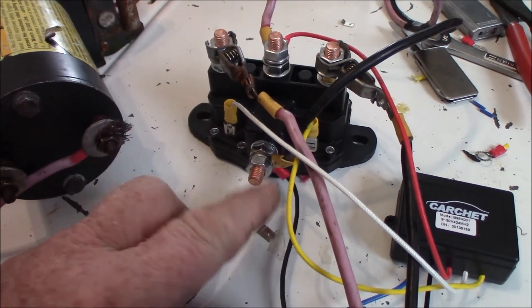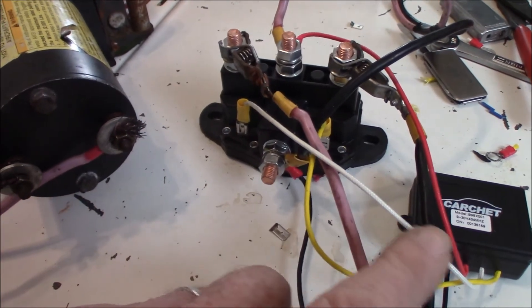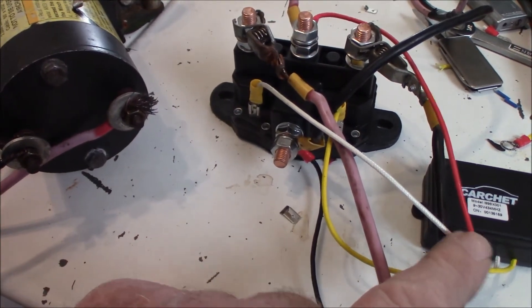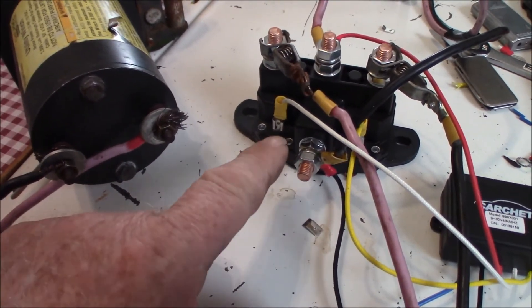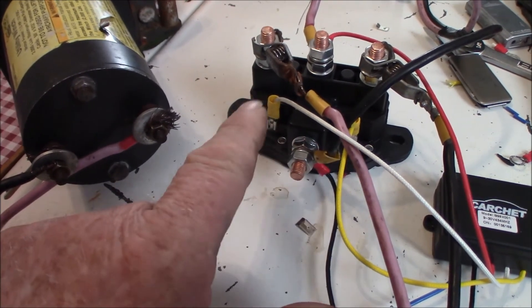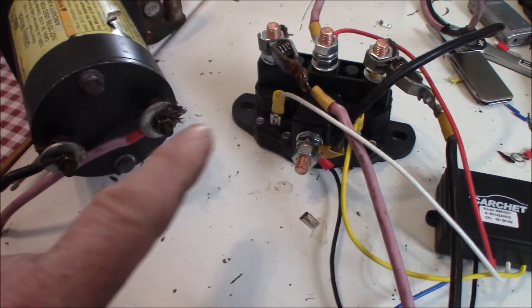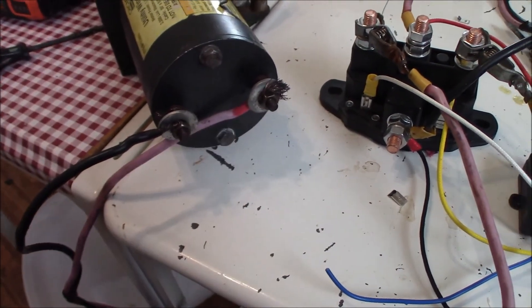So it's ground from the battery, grounds to this, hot from the battery, positive to this. And then these two little wires here are your signal wires going forward and backward. And these two go to your winch over here.